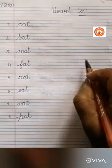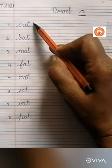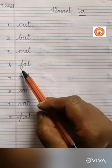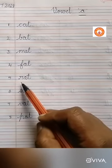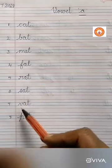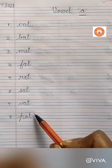Okay children, I'll revise once. C-A-T spells Cat. B-A-T spells Bat. M-A-T spells Mat. F-A-T spells Fat. R-A-T spells Rat. S-A-T spells Sat. V-A-T spells Vat. P-A-T spells Pat.